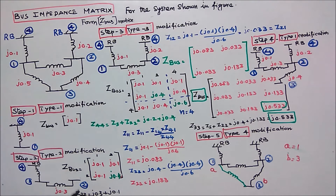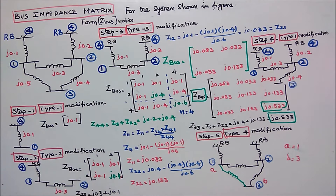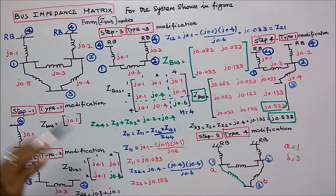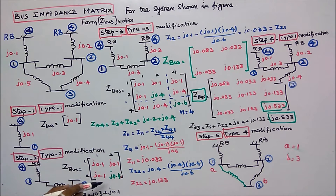Step two is a type two modification. I am connecting new bus two to the old bus one. Its self impedance is j0.3. Now I got a two by two matrix: Z11 equals j0.1, Z12 equals j0.1, Z21 equals j0.1. Z22 equals Zs plus Z11; Zs equals j0.3, Z11 equals j0.1, therefore Z22 equals j0.4.